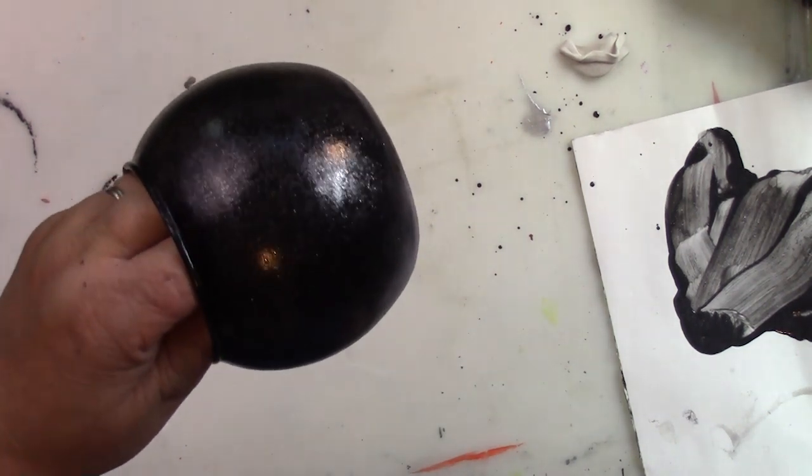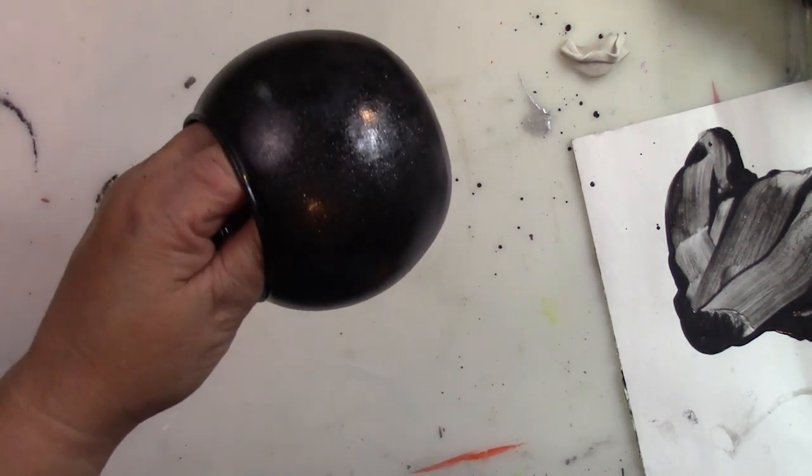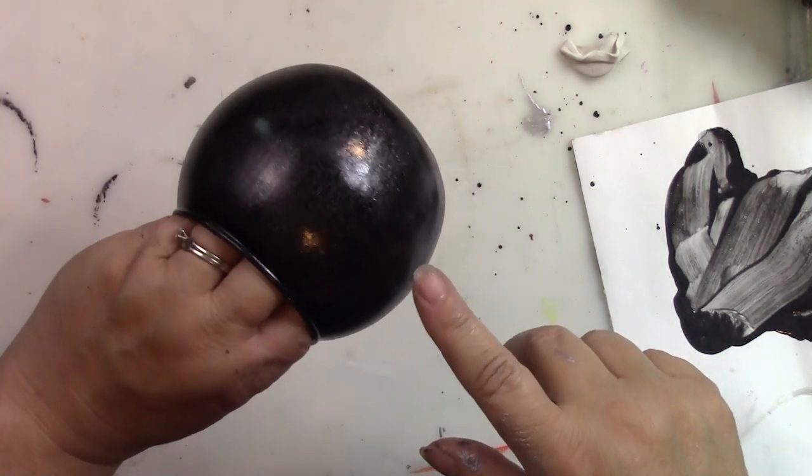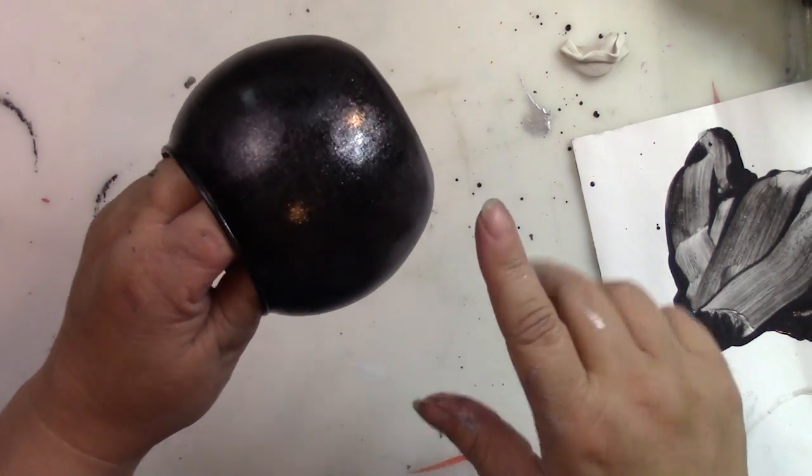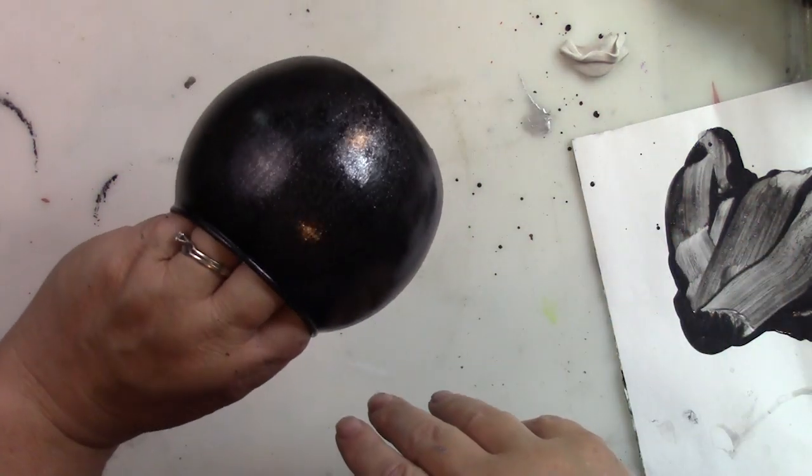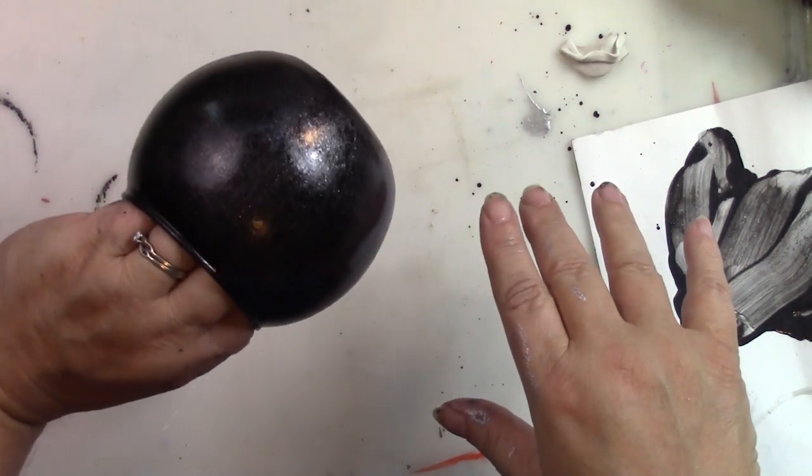So now that's dry I hope you can see how sparkly that is. The Glamour Dust is an ultra-fine glitter and it's just, and what's really nice is it's in the paint so it's not going to come off on your hands at all or be all over your house. I love that.